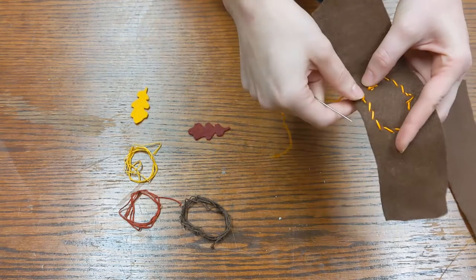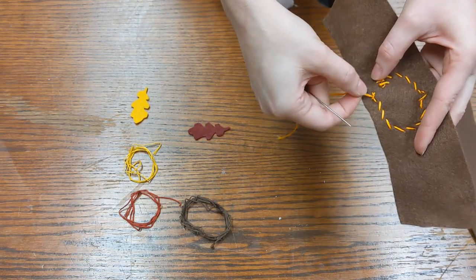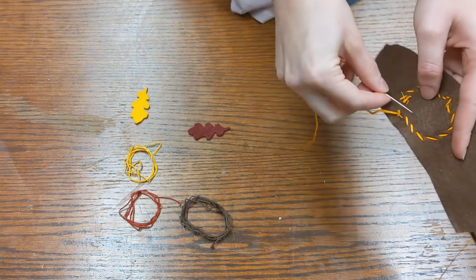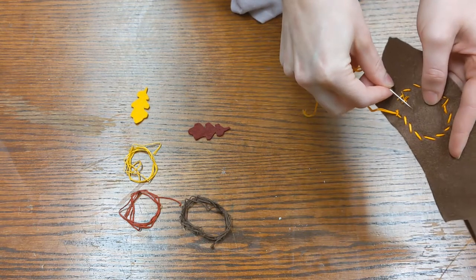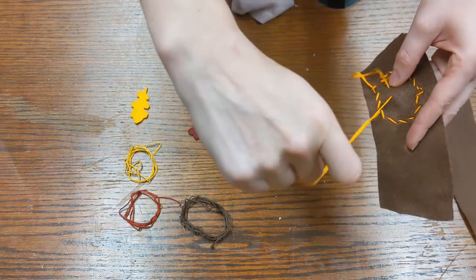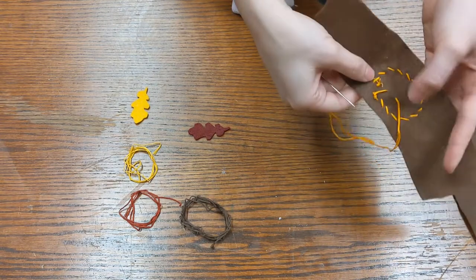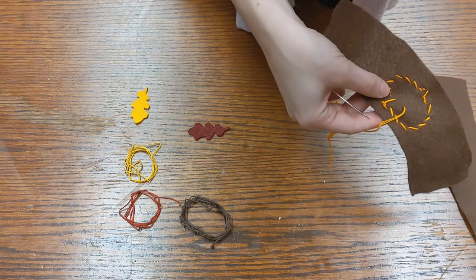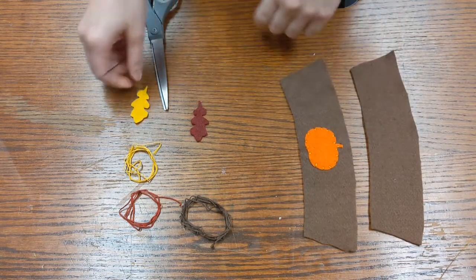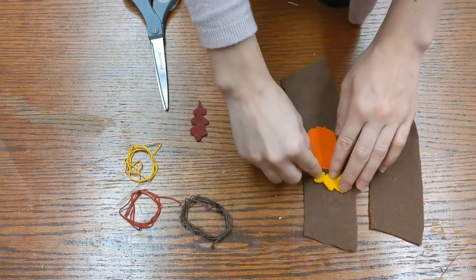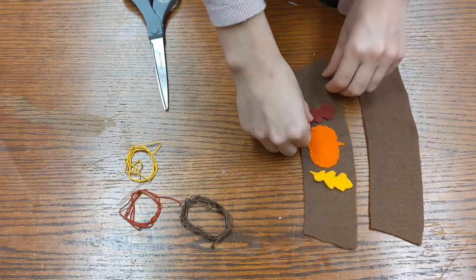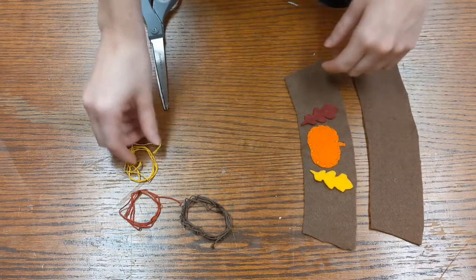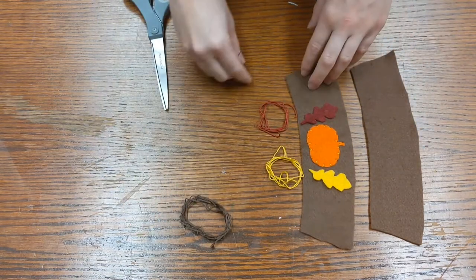And then you just snip off that excess. You can always run it too, like just catching a little bit of the back. You can run it through, that way you won't have the thread coming out on the side on you. And then you just snip that. Now that we've completed the pumpkin, we're going to do both of the leaves in the same way, just using the corresponding embroidery floss.